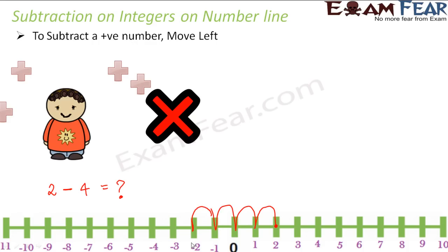So where have you reached? You have reached at minus 2. So that means the result would be minus 2. So if you are subtracting a positive number from a given number, you should move towards left on the number line.